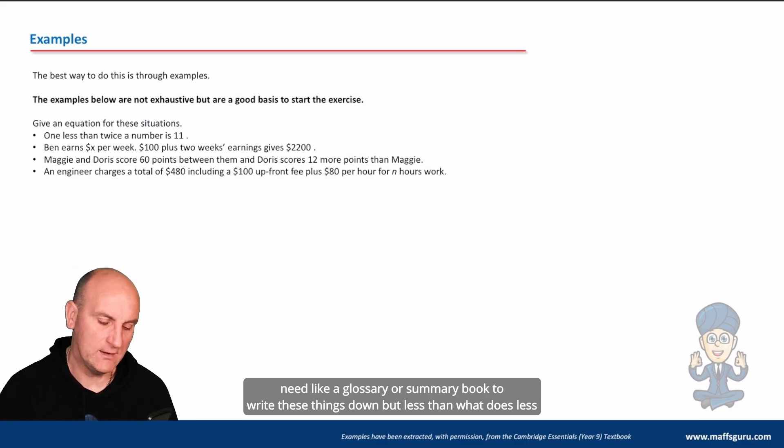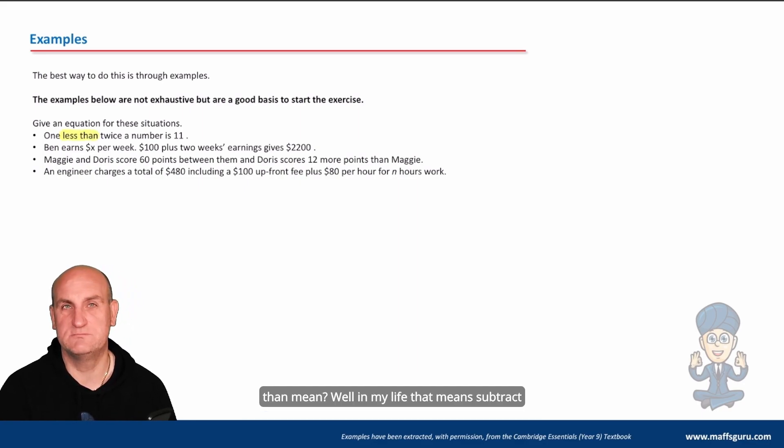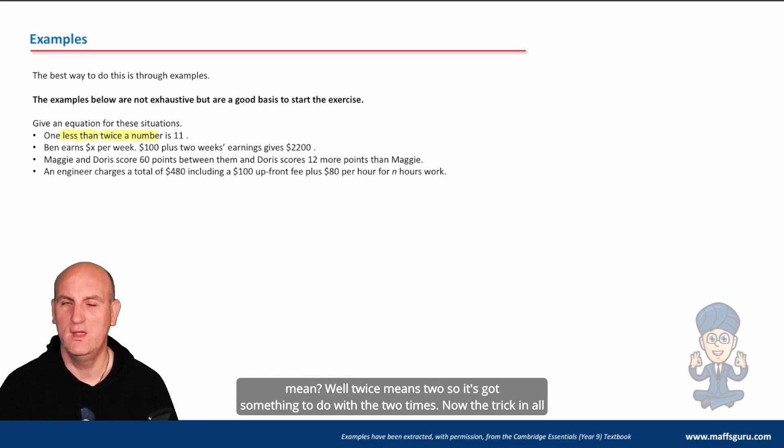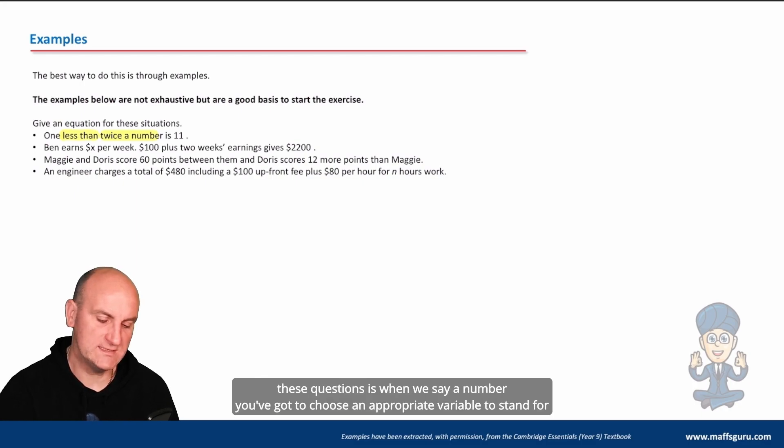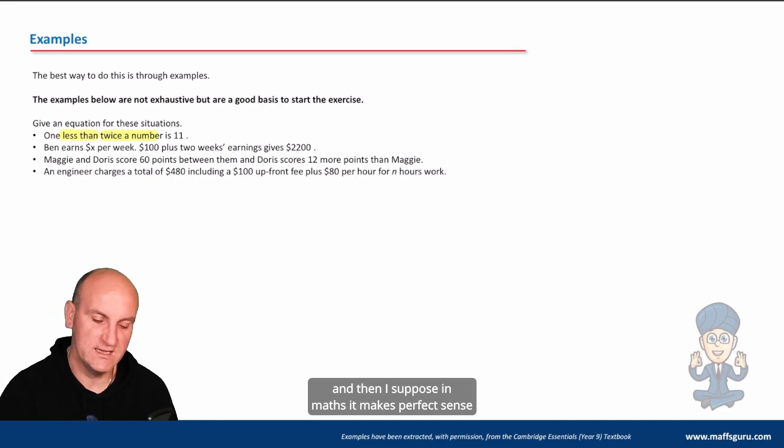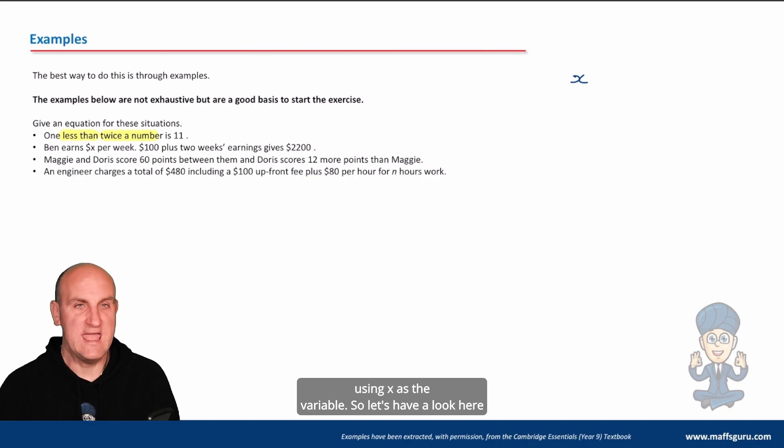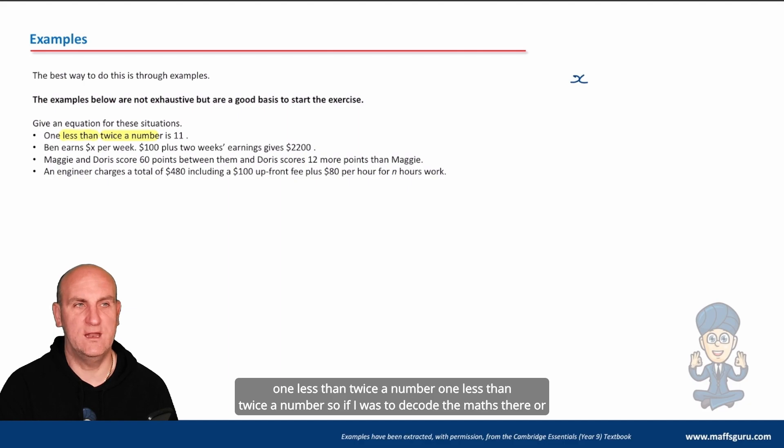Let's have a look at some examples here. The wording is what you've got to learn. You almost need like a glossary or summary book to write these things down. Less than - what does less than mean? In my life that means subtract, take away. Twice a number - what does twice a number mean? Well, twice means two, so it's got something to do with two times. The trick in all these questions is when we say 'a number', you've got to choose an appropriate variable to stand for it. In maths it makes perfect sense to use the letter x.